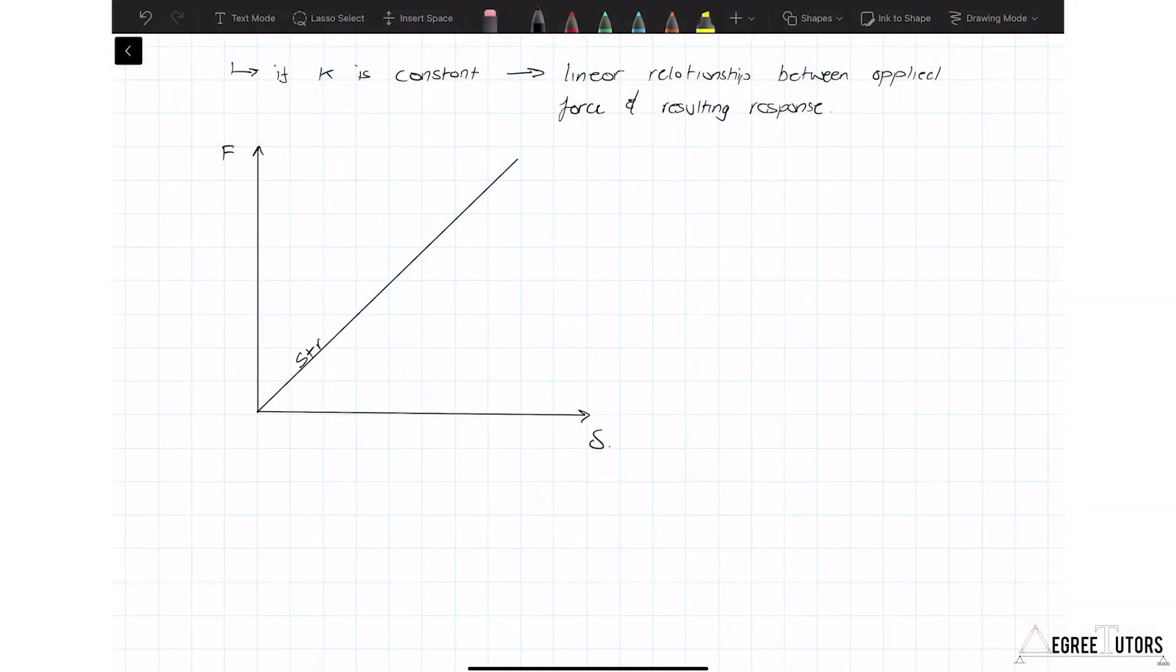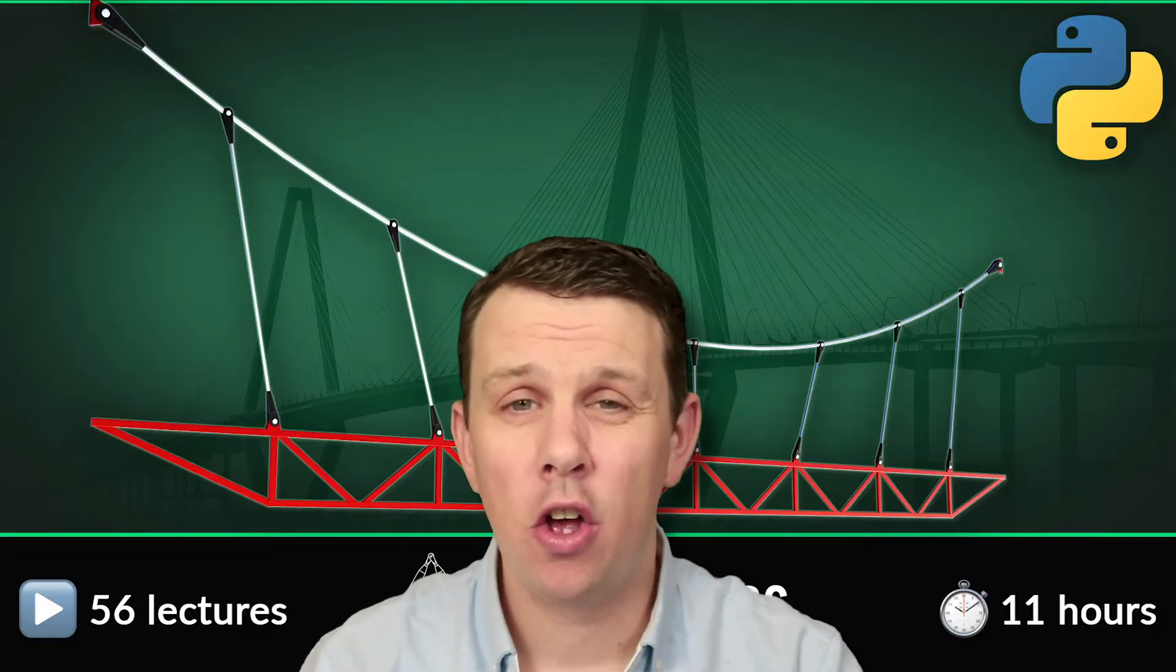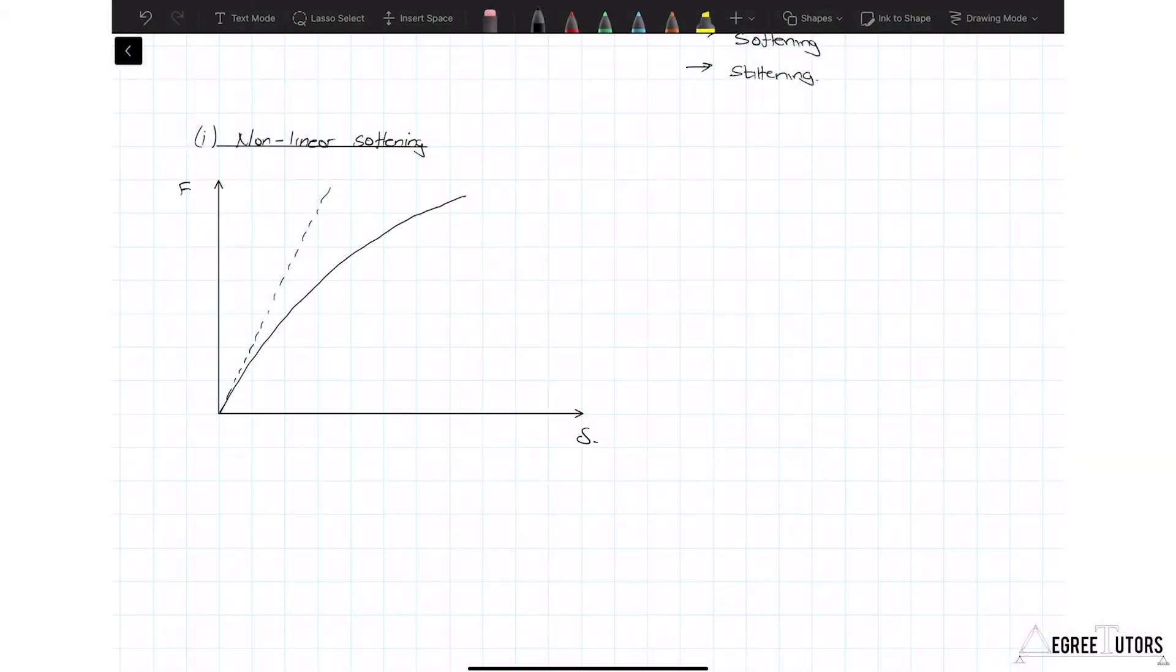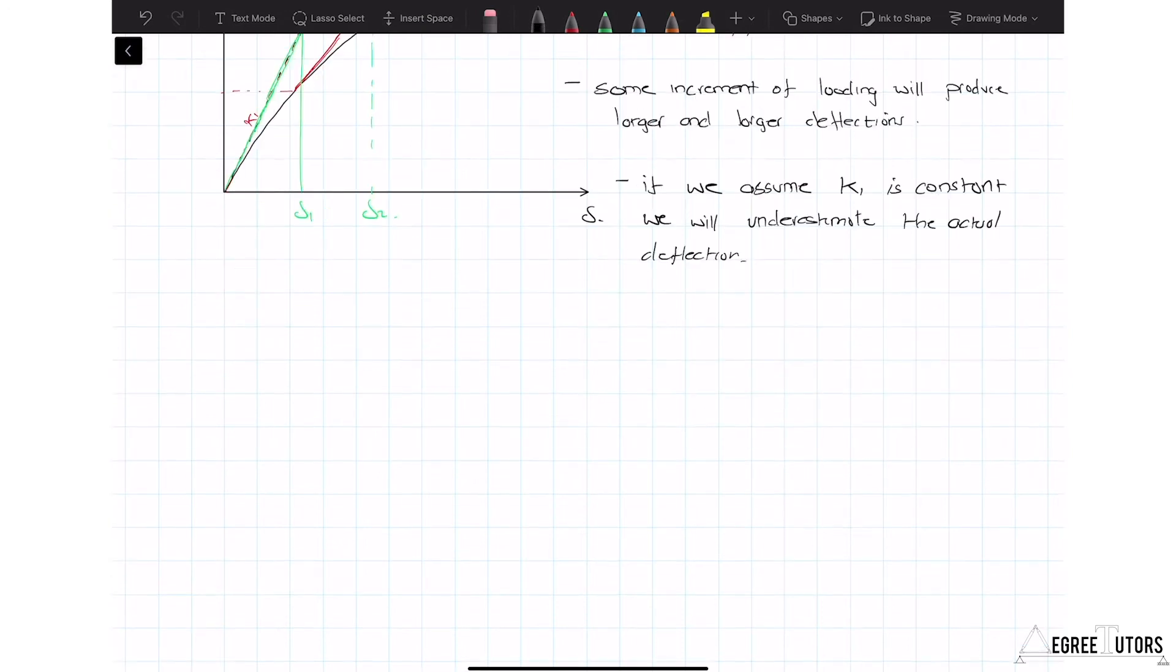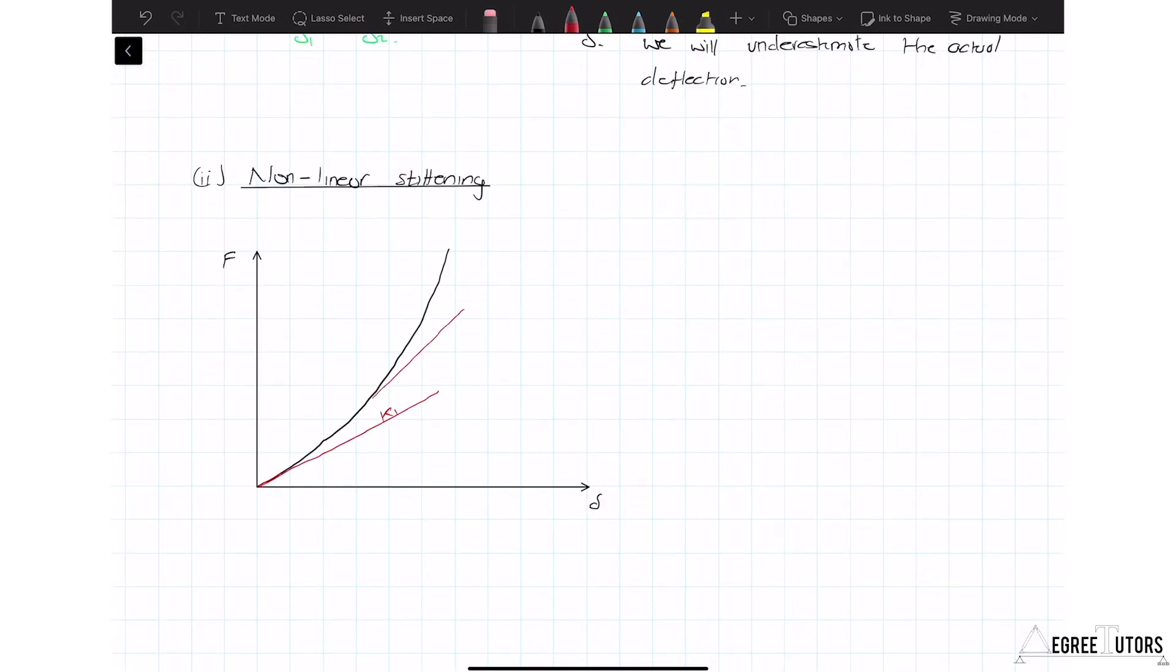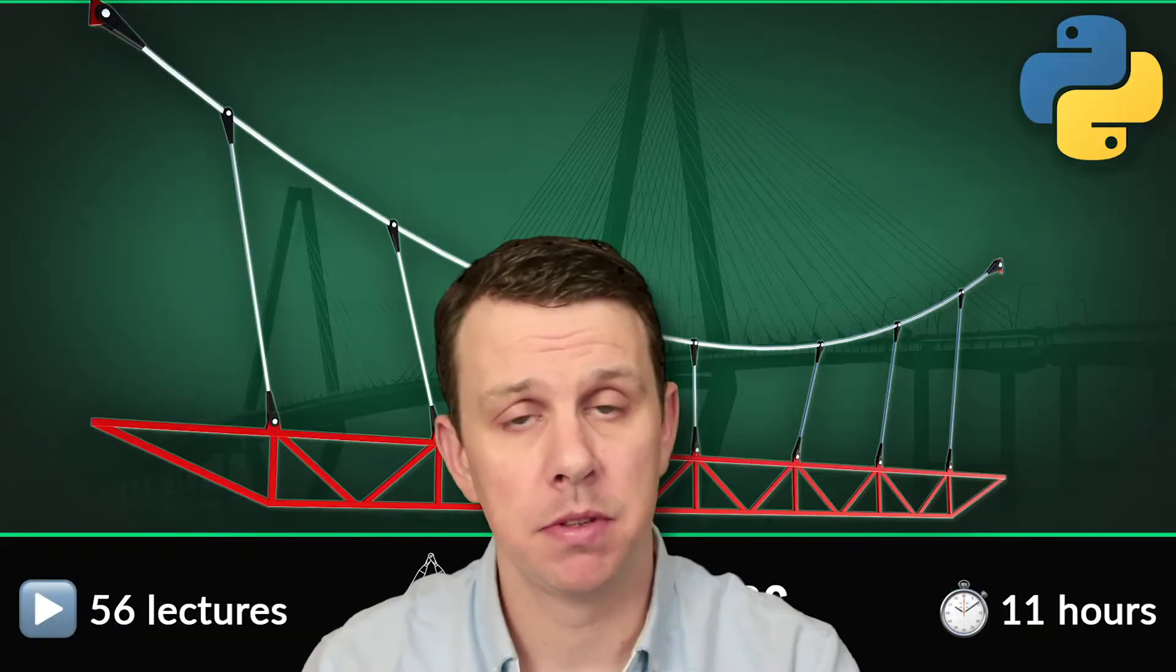As engineers our starting point usually with structural analysis is to assume linear structural behavior. In other words we assume that there's a linear relationship between the loads we apply to a structure and the resulting displacements we observe of that structure. So doubling the load would double the displacements. However this is not always the case because some structures undergo a stiffening or indeed a softening as more load is applied. Structures that exhibit this behavior are essentially behaving non-linearly and we can no longer rely on that linear relationship between loads and displacements.